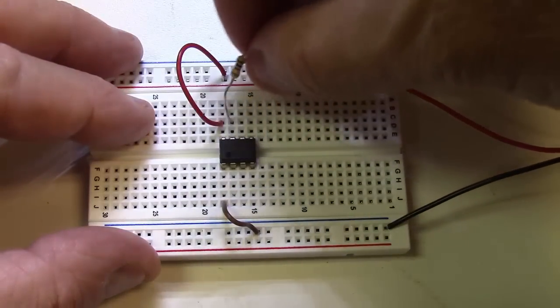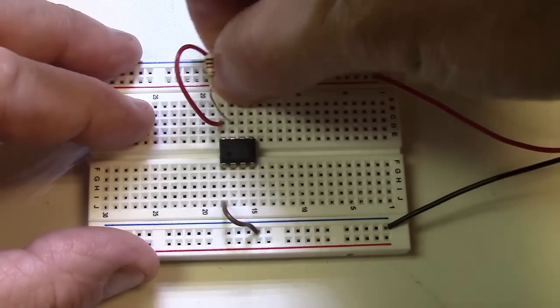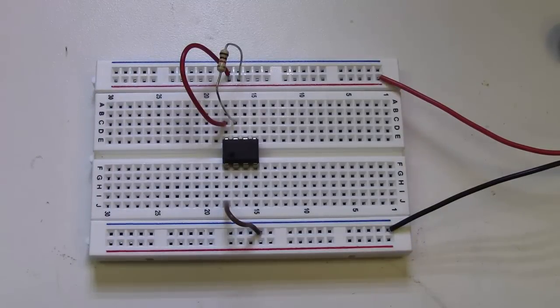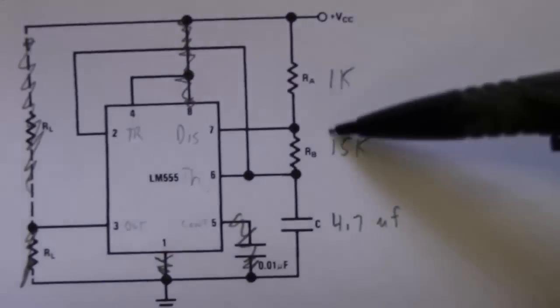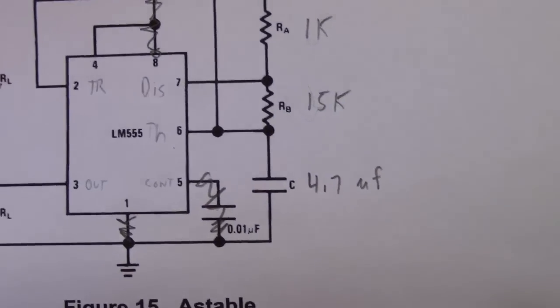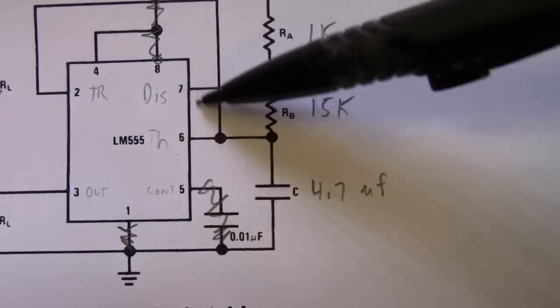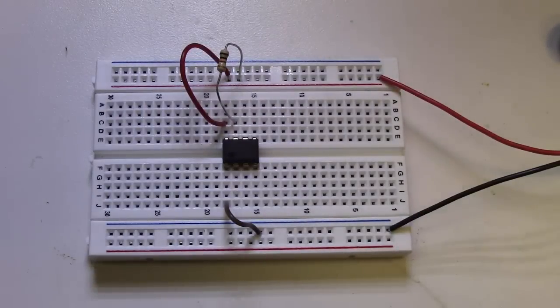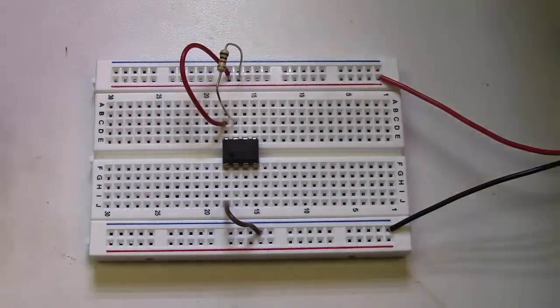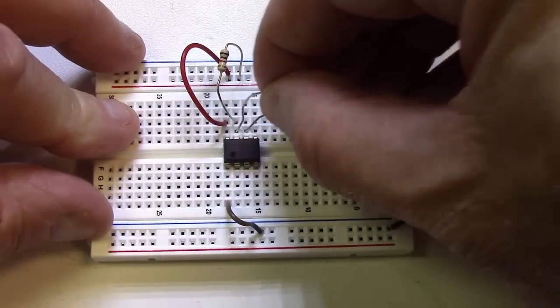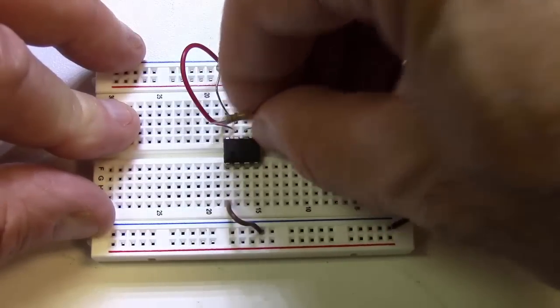We also need to hook RB, which is a 15K, between seven and six. So pin seven and six have this 15K. I'm going to get these really close together here and go from pin seven to six.